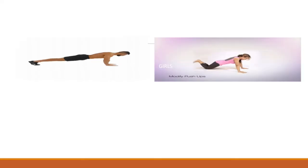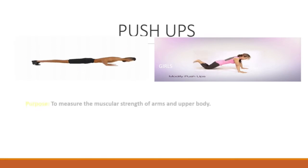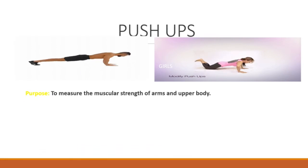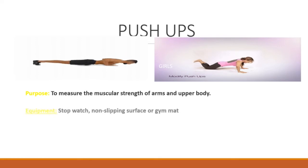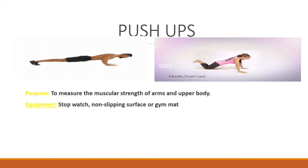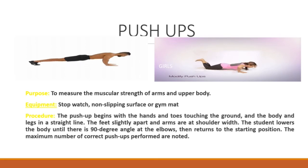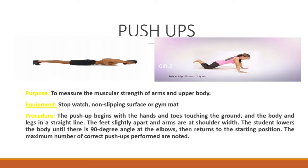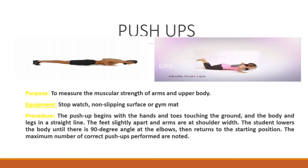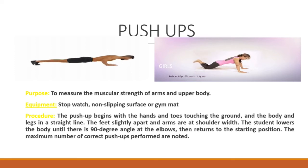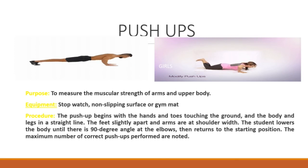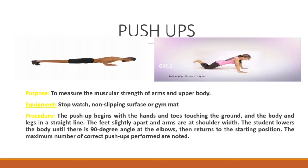Push Ups. Purpose: To measure the muscular strength of arms and upper body. Equipment: Stopwatch, non-slipping surface or gym mat. Procedure: The push up begins with the hands and toes touching the ground and the body and legs in a straight line. The feet are slightly apart and arms are at shoulder width. The student lowers the body until there is a 90 degree angle at the elbows, then returns to the starting position. The maximum number of correct push ups performed are noted.